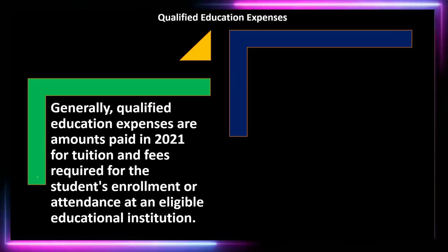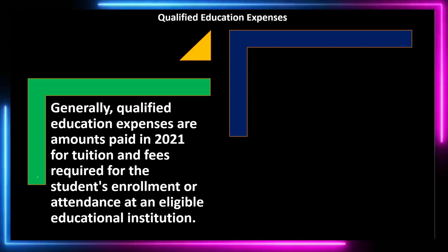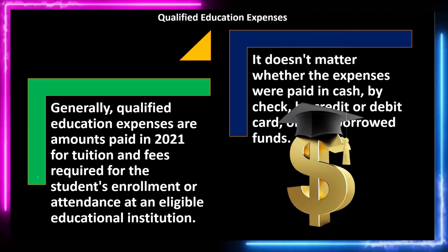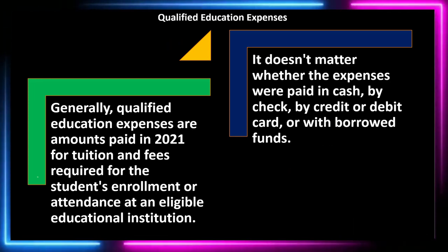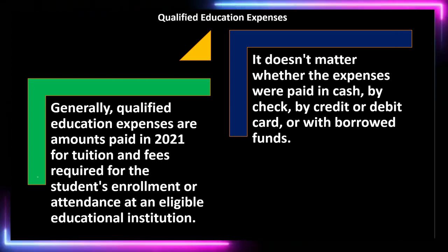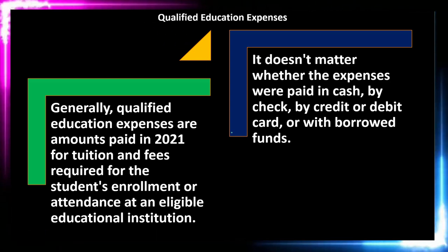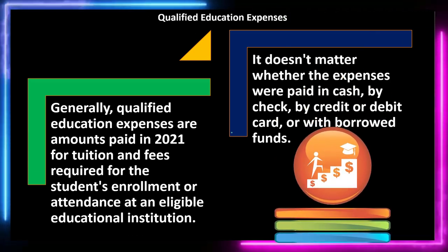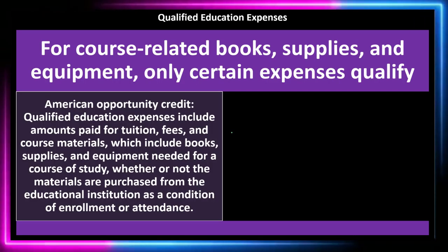Qualified education expenses are generally amounts paid in 2021 for tuition and fees required for the student's enrollment or attendance at an eligible educational institution. Tuition is the most clear-cut component. It doesn't matter whether the expenses were paid in cash, by check, by credit or debit card, or with borrowed funds — the payment method is irrelevant.